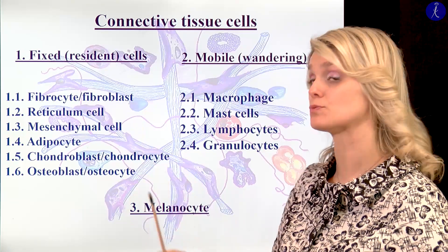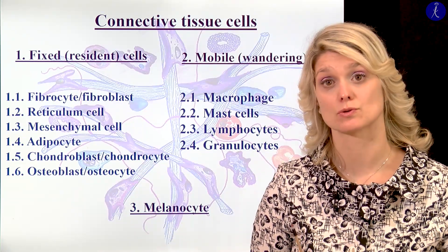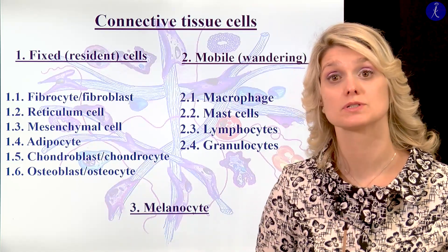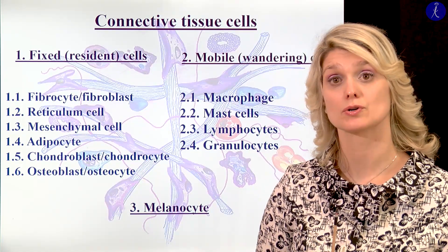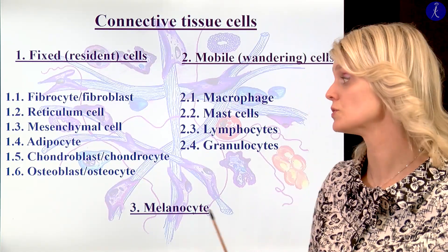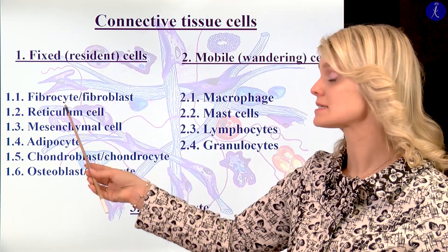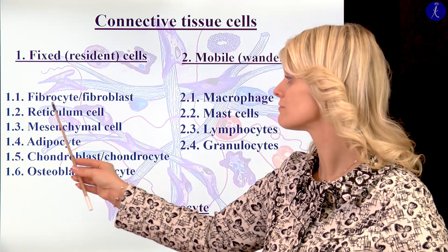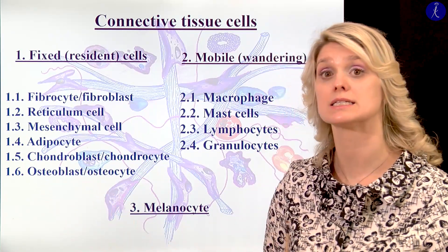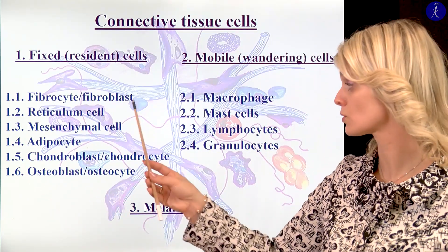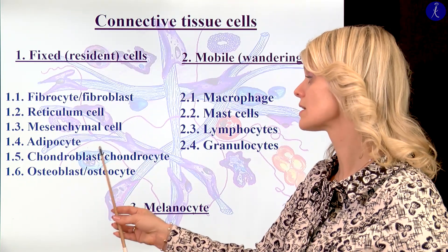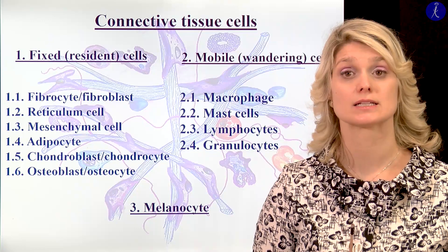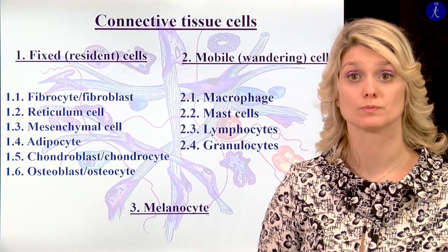In the group of the fixed cells I would like to demonstrate the fibrocytes and fibroblasts — they are really important parts of the connective tissue; the fibroblasts will produce the fibers and the ground substance. We also have to mention the reticulum cells, the cells of the reticular connective tissue. I will talk about the mesenchymal stem cells. And in this group we have to mention the adipocytes, the chondroblasts and chondrocytes, the osteoblasts and osteocytes — the cells of the cartilage and the bone tissue.